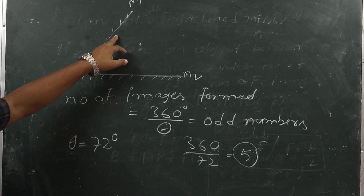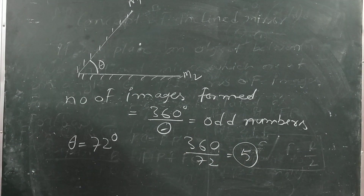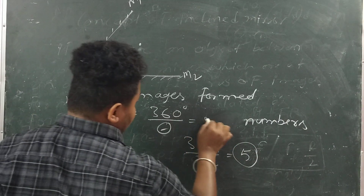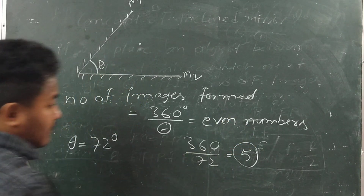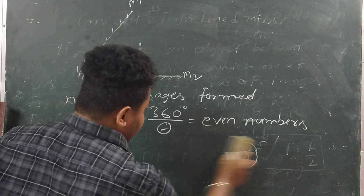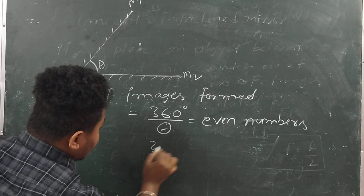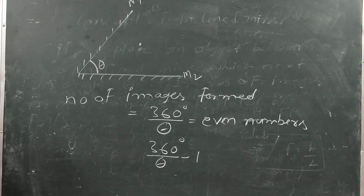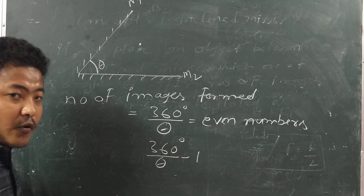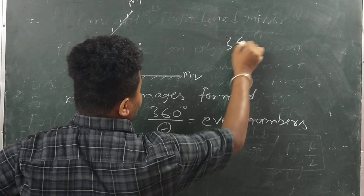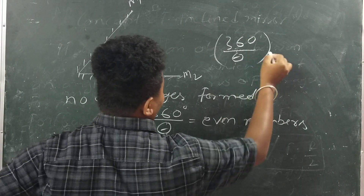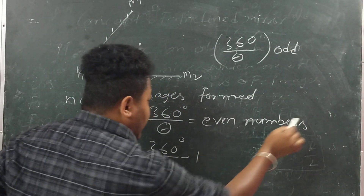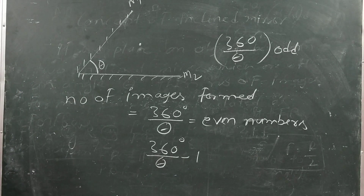But if 360 by theta gives an even number, then the number of images formed is 360 by theta minus one. For odd numbers, the formula stays as 360 by theta. For even numbers, we subtract one from the result.